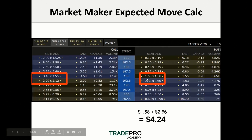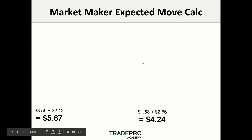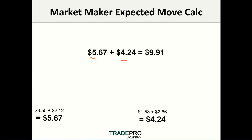Now if you look on the call side, you can see the first price in the money and the first out of the money. Add these two together and you get: you're going to pay $3.55 at $1.90 for Apple, and then $2.12 at $192.50 for Apple, which costs you $5.67. Now what you do is you simply average those two prices out. So you add $5.67 plus $5.24, which gives you $9.91, and divided by two gives you $4.96.